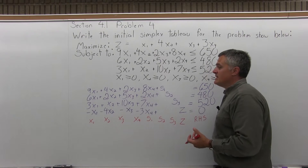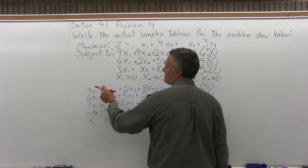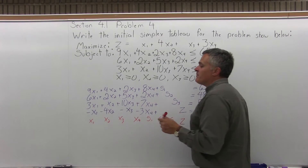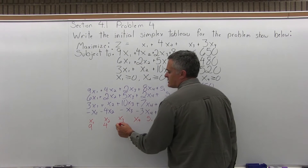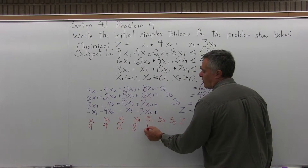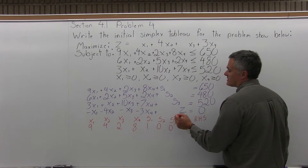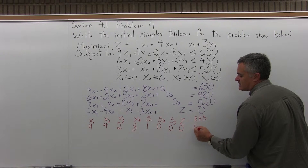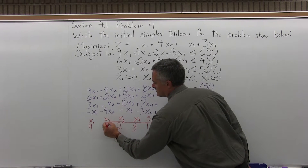The first equation — 9x1 plus 4x2 plus 2x3 plus 8x4 plus s1 equals 650 — becomes the first row of the matrix. In the x1 column: 9; x2 column: 4; x3 column: 2; x4 column: 8; s1 column: 1; s2 column: 0; s3 column: 0; z column: 0; and the right-hand side value is 650.